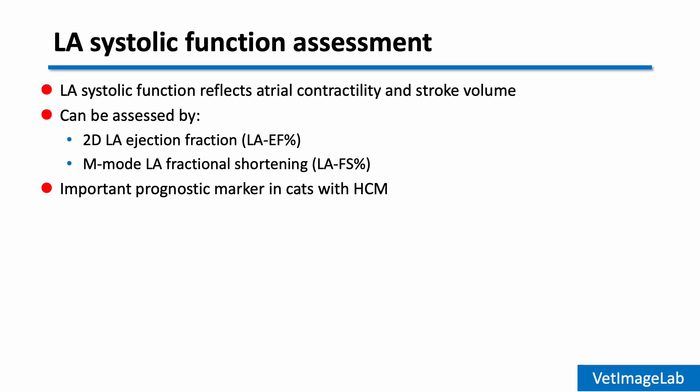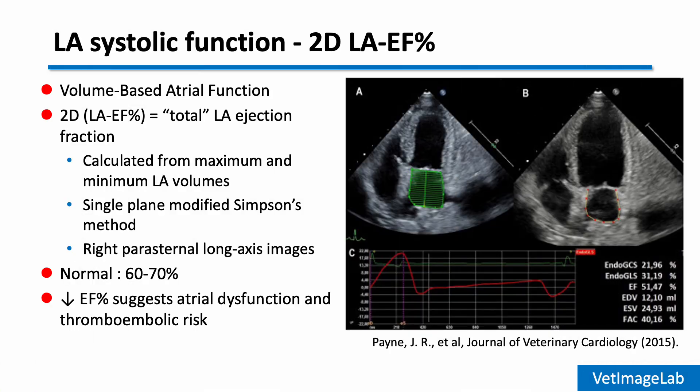Let's now move on to how to evaluate left atrial systolic function, which reflects the contractile performance of the LA and may indicate disease severity in HCM. We can assess LA systolic function using both 2D and M-mode methods. One of the main 2D methods is the calculation of LA ejection fraction, which represents the percentage change in LA volume between maximum and minimum filling. This is typically calculated using the single-plane modified Simpson's method based on right parasternal long axis images.